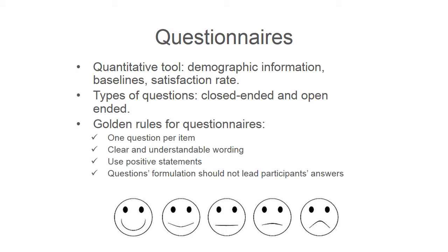Questionnaires are also recommended for assessing satisfaction rates. It is important to consider the types of questions involved. Questions can be closed-ended or open-ended. Open-ended questions are more flexible, giving participants space to express their views. Closed-ended questions are trickier and include, for instance, multiple choice questions, yes/no questions, or the Likert scale. The Likert scale is what most people use to measure satisfaction rates, but it is not always applied as it is supposed to be — because the Likert scale is meant to be mutually exclusive, with two main characteristics.